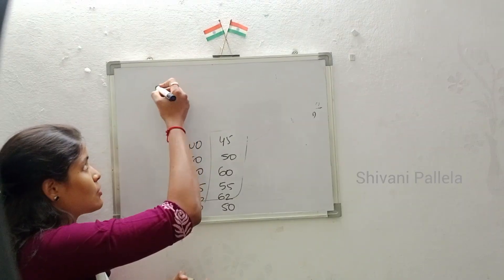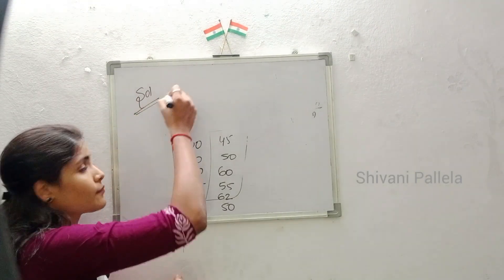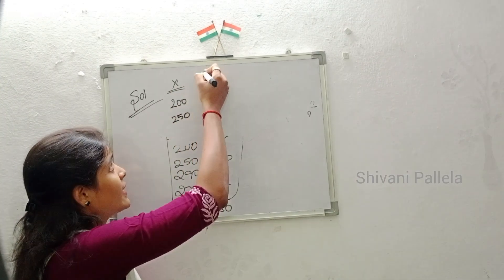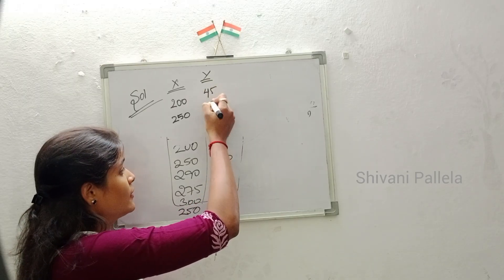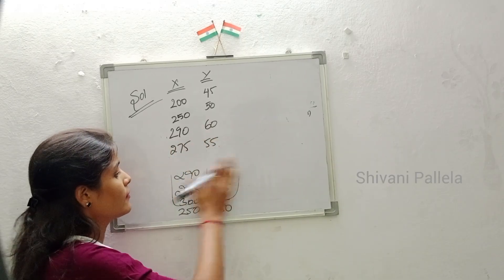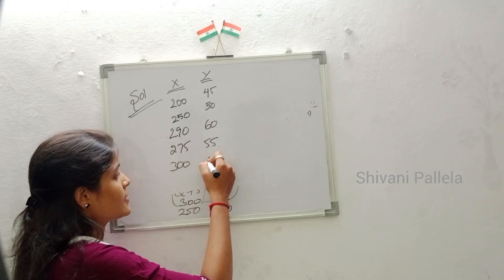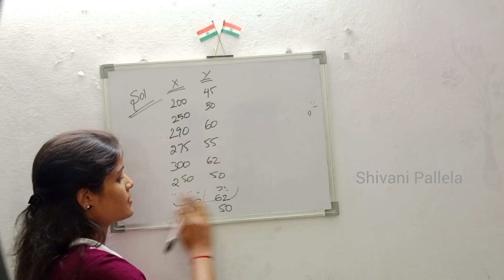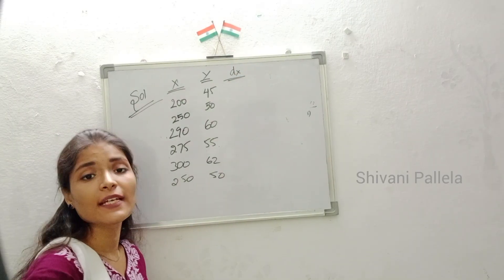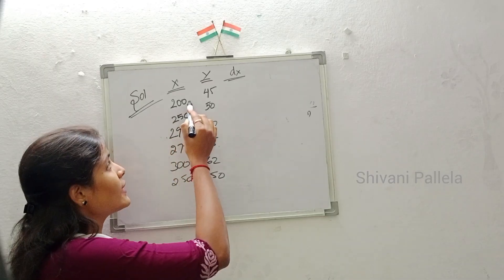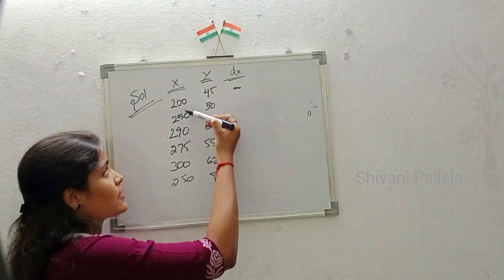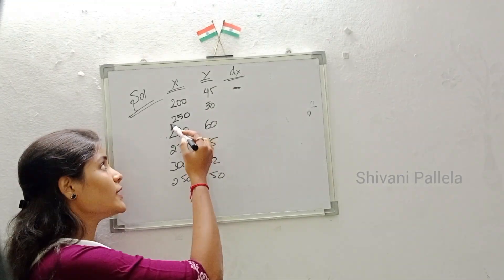Now I am writing the solution. For X: 200, 250, 290, 275, 300, 250. For Y: 45, 50, 60, 55, 62, 50. To calculate dx: the first number gets a hyphen (no comparison). The second number 250 is more than 200, so we write plus.